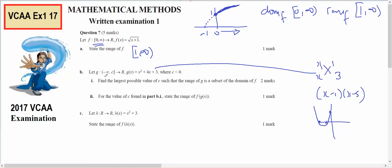Let g have a restricted domain, and this is what g looks like. I've already factorized g, and this looks like what g looks like. However, find the largest possible value of c such that the range of g is a subset of the domain of f. So the range of g is a subset of the domain of f, and my domain of f is 0 to infinity.